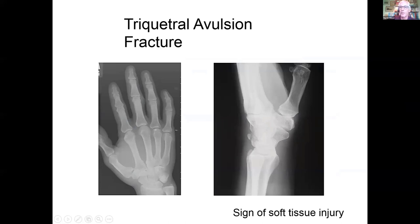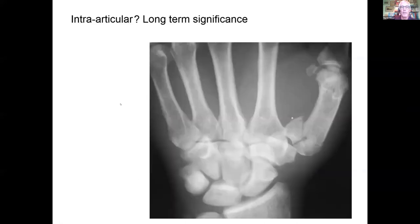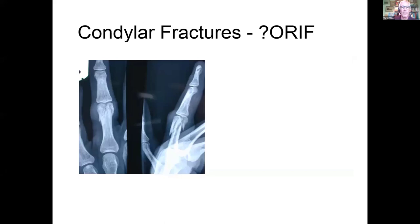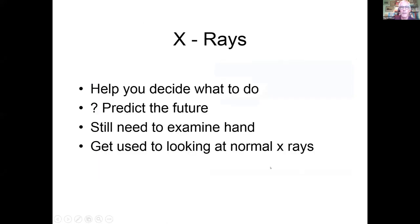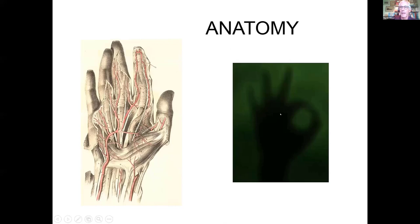An intra-articular fracture like this is likely to cause problems with this joint in the future if nothing is done about it. So the future can be predicted to a certain extent from what the x-ray shows. In summary, x-rays are very useful — they can help you decide what to do, warn you what not to do, and possibly predict the future. But remember, we can't just rely on imaging; we've still got to have a basic examination of the hand. Get used to looking at normal x-rays; the more normal x-rays you look at, the more you'll spot abnormalities. Anatomy is the key. An x-ray, a radiograph, is simply a shadow of the normal anatomy on a plate.